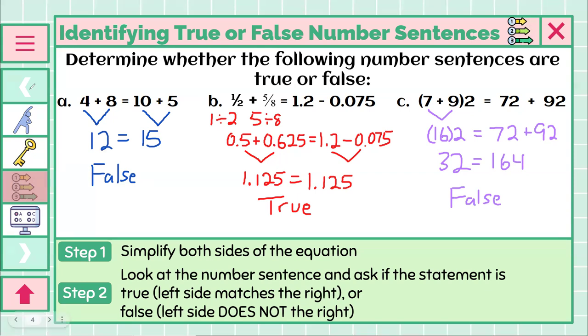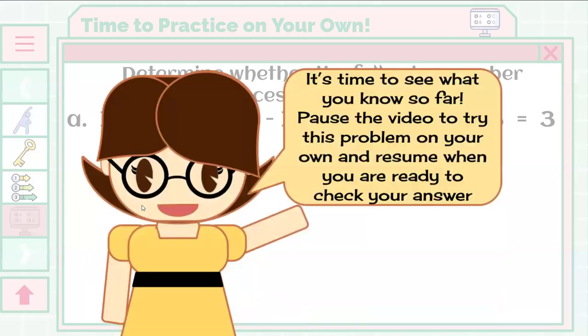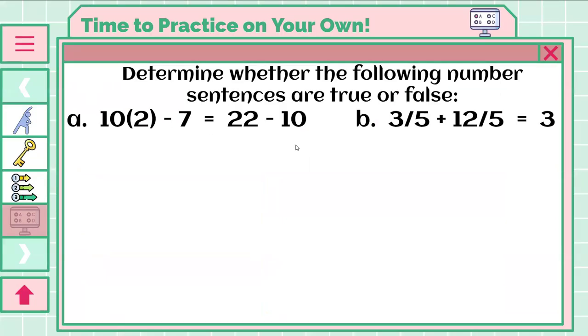And I'm going to clear this up and head to the U-try. So it's time to see what you know so far. Pause the video to try this problem on your own, and resume when you are ready to check your answer. The problem being, determine whether the following number sentences are true or false. And you have A and B.